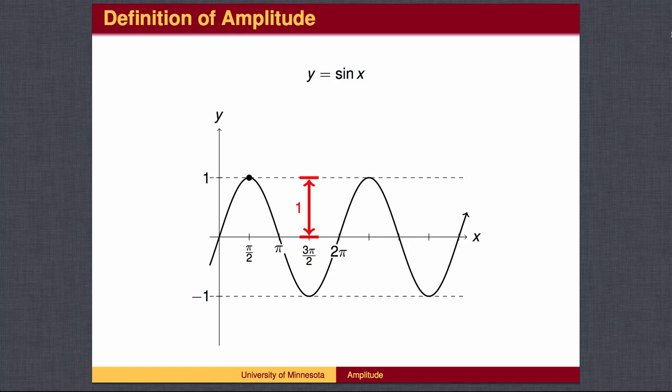The standard sine wave goes up to a maximum value of 1, and down to a minimum value of negative 1. The distance from the midline to the top is called the amplitude, so y equals sine of x has an amplitude of 1. The amplitude could also be measured by taking half of the distance from the top of the wave to the bottom of the wave.